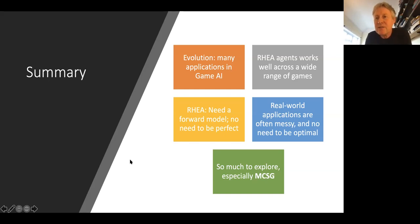I think I'll stop there and take any questions. So evolution, I would say many applications in game AI. Rolling horizon works really well across a really wide range of games. If there's time, there's one or two more demos I can show. We've also done some tests with the forward model - it doesn't need to be perfect to be useful. That's quite interesting. Real world applications are often really messy. There's no need to be optimal. There's lots more to explore in this area. One of the things that's really excited me at the moment is Monte Carlo graph search. I've actually misspelled it there - should be MCGS. I'll stop there and take any questions.